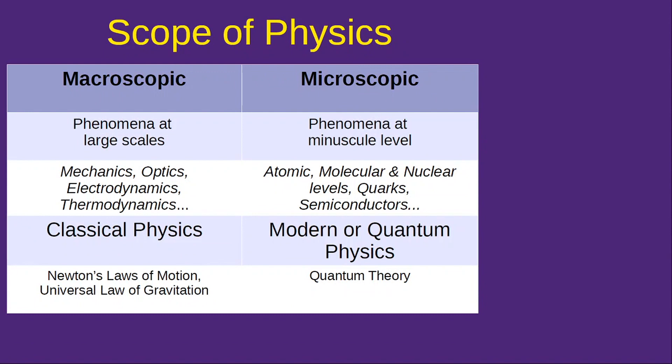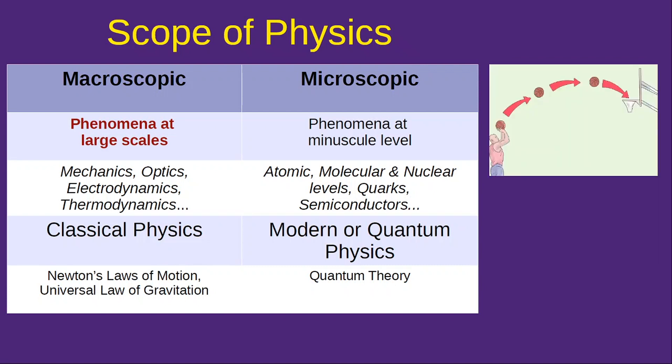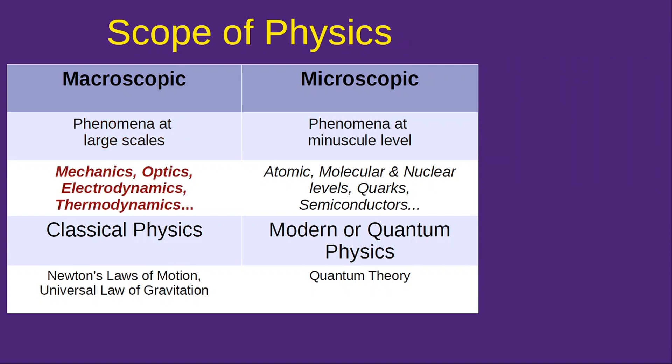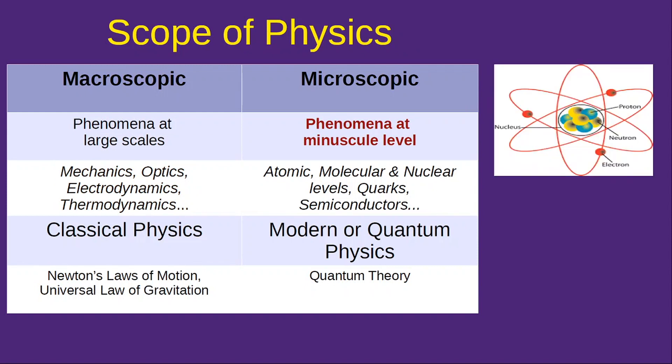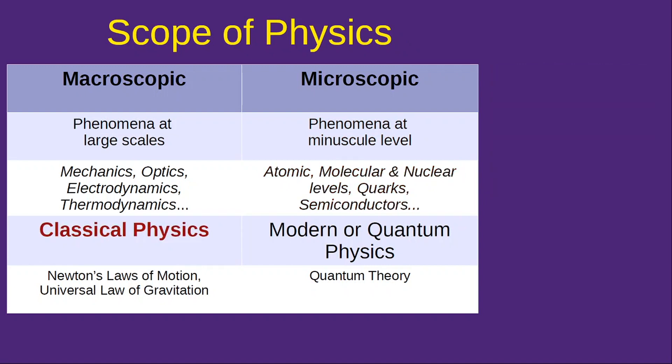So the next topic is scope of physics. It has got two parts, the macroscopic and the microscopic. The macroscopic part deals with phenomena at large scales. The macroscopic phenomena have been studied from a very long time. This is why it is known as the classical physics.